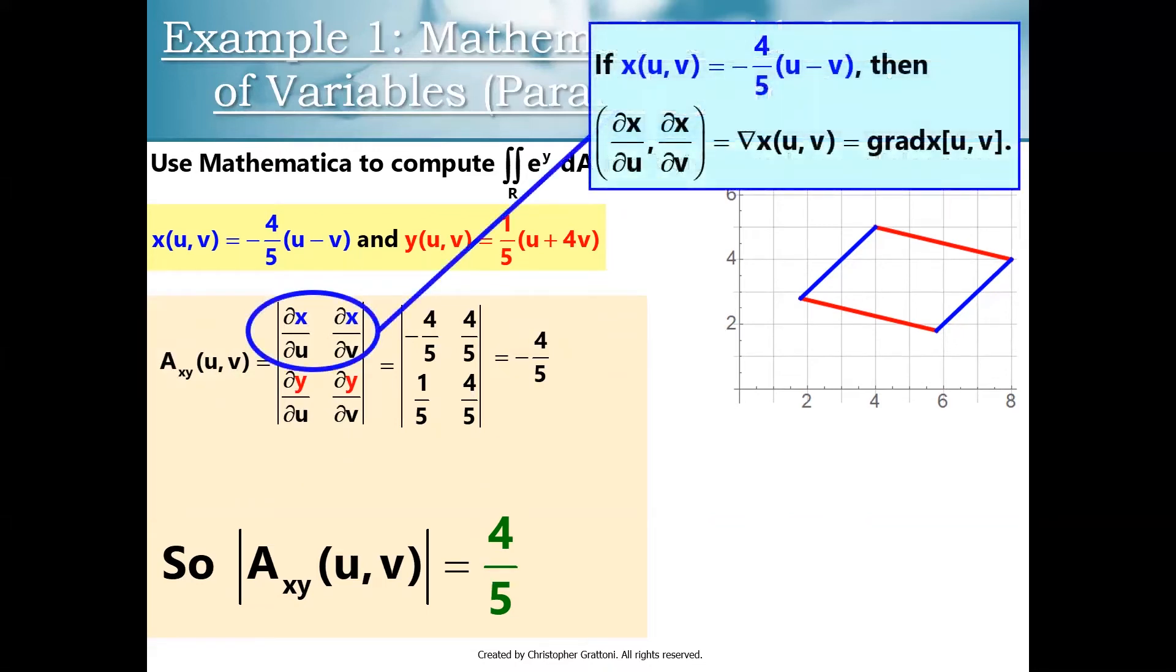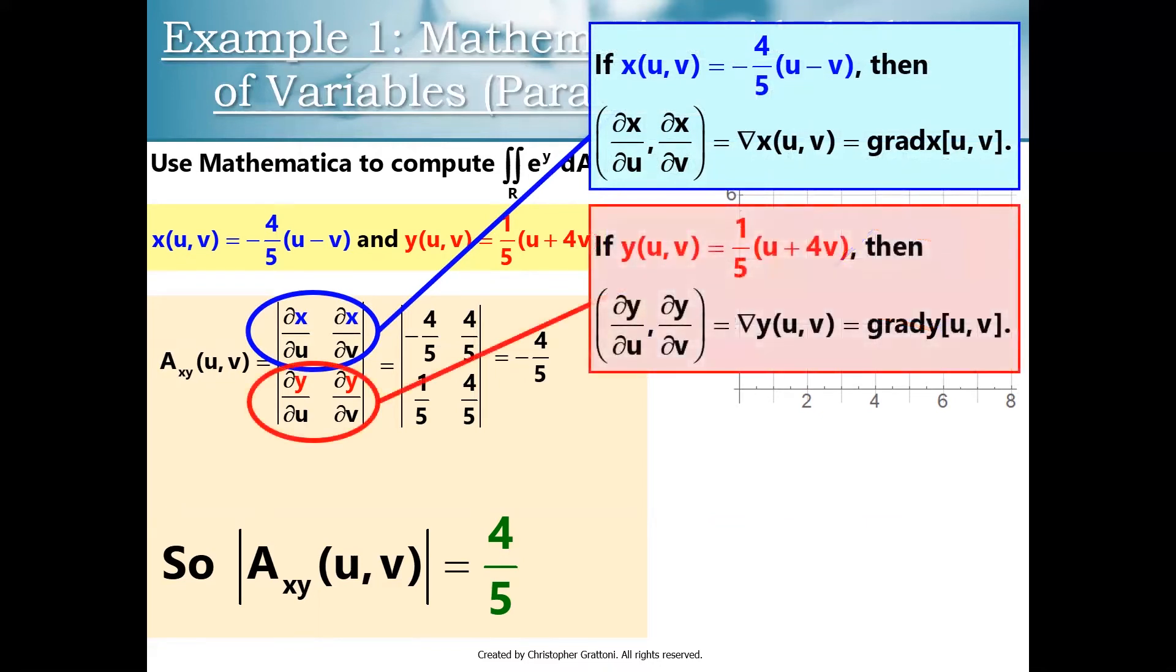Now, you guys saw this in the previous video. But just to remind you again, there is a cool pattern that you can find emerging in your Jacobian matrix here. The first row is the gradient of x as a function of u and v. And the second row is the gradient of y, where y is treated as a function of u and v. So if you ever forget the formula for the area conversion factor, you just have to remember that you need the gradient of the first coordinate of your transformation as your first row and the gradient of the second coordinate of your transformation as your second row. And you should be good to go there.